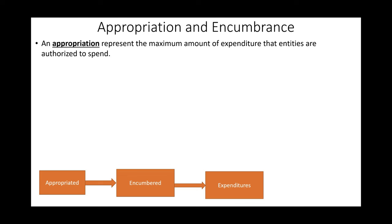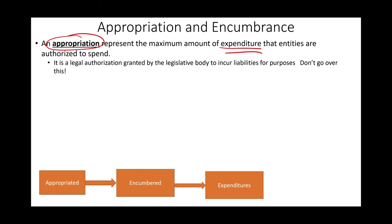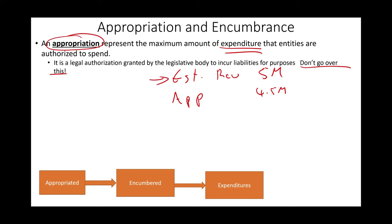Another budgetary account is Appropriation — the maximum amount of expenditure that an entity is authorized to spend. At the beginning of the period, the government meets and says: this is how much we expect in revenue, and this is how much we expect in appropriation — in expenditure. It's the legal authorization granted by the legislative body to incur liabilities. Simply put: do not go over this amount. For example, estimated revenue could be $5 million and appropriation $4.5 million, meaning we expect to raise $5 million in revenues and estimate to spend $4.5 million.